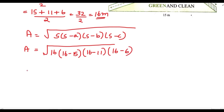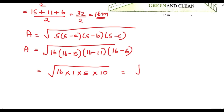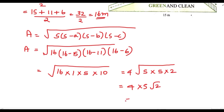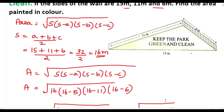That equals the square root of 16 × 1 × 5 × 10. We can write 5 × 10 as 5 × 2 × 5, so this becomes 4 × 5 × √2, which equals 20√2 square meters. So the area of this wall is 20√2 square meters.